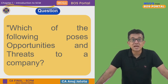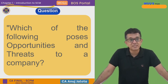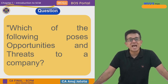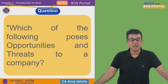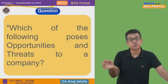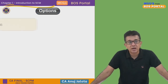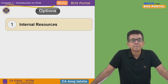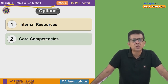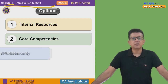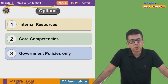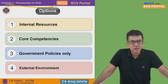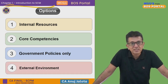Let's start with a question for today. This is Chapter 1: Introduction to SCM. The question is: which of the following poses opportunities AND threats to a company? The four options are: first, internal resources; second, core competency; third, government policies only; and fourth, external environment.